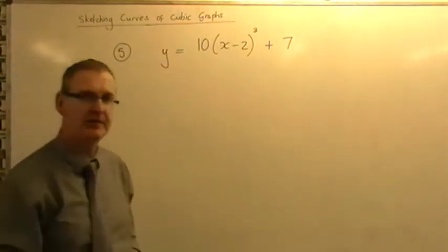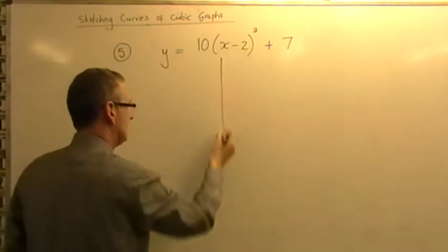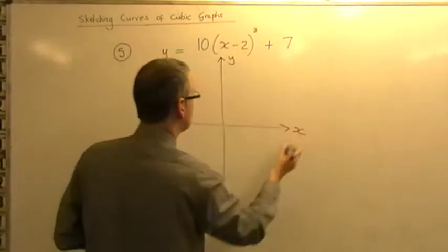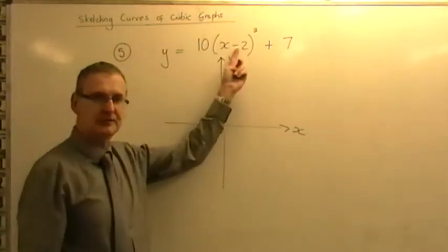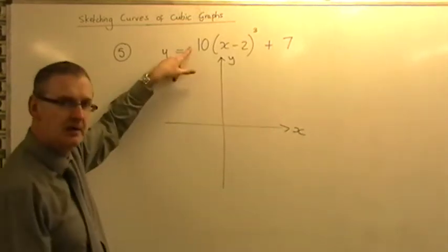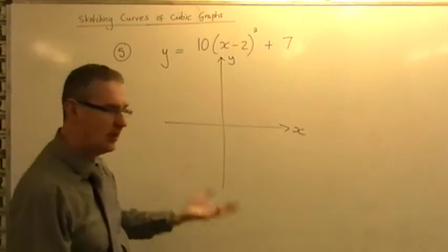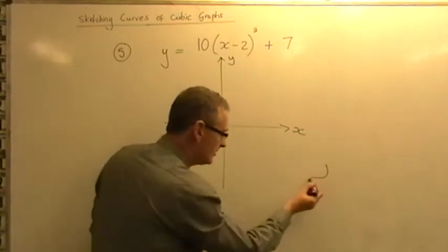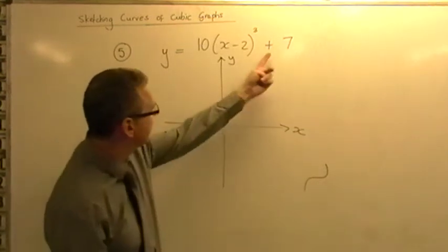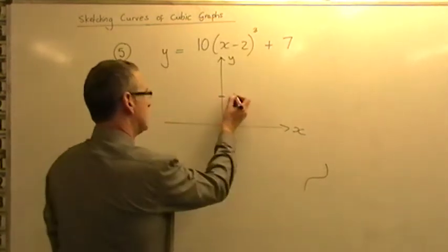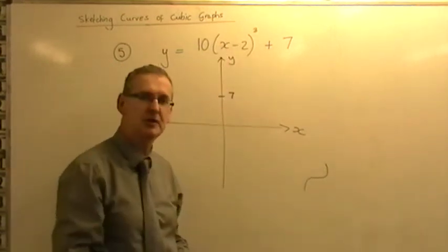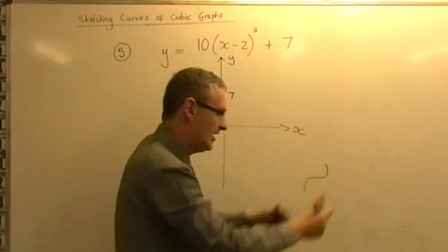And I'm going to do ten lots of x minus two in a bracket cubed plus seven. So I'm going to sketch that one there. So I'm going to do a sketch, set up the y and x axis. It's x in a bracket being cubed, so it's a cubic. There's a positive in front of there, so it's a positive cubic. So it's going to be that sort of shape. Positive cubic. Okay, it's moved up seven places, so I'll mark plus seven on the y axis. And inside the bracket we've got a minus two, so that means it's moved two places right.